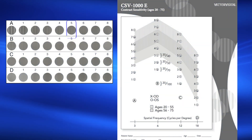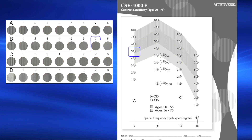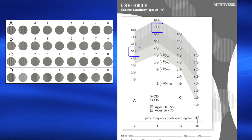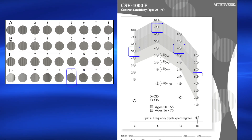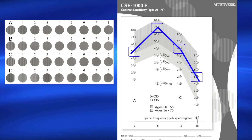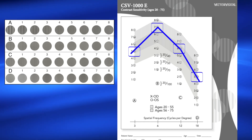Second, this type of test measures patients using a wide range of bar sizes and a wide range of contrast levels, which allows testing across the full range of vision. This in turn allows us to measure a full range of patients under a variety of conditions.